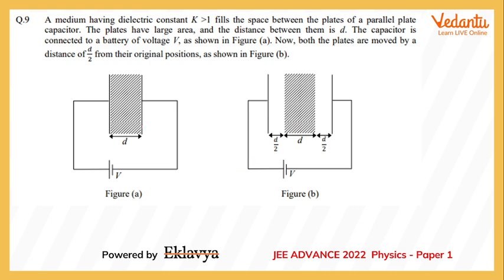Certain options are given and we want to talk about those options. In the entire process, the battery stays connected with the capacitor plates. I'm going to write the capacitance of figure A as C1 and figure B as C2. I'm going to assume that the area of the plate is A.